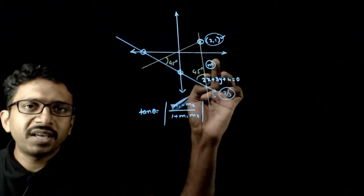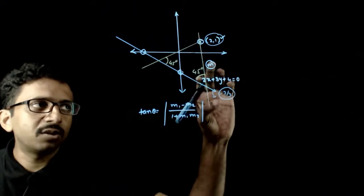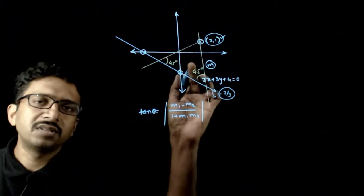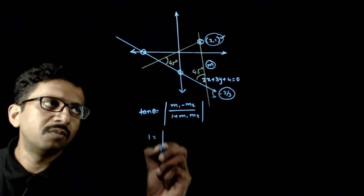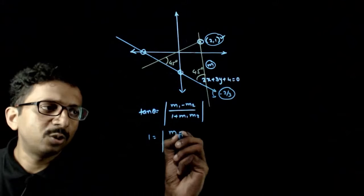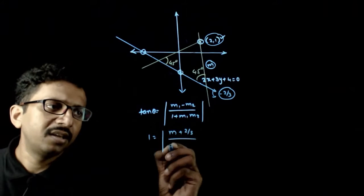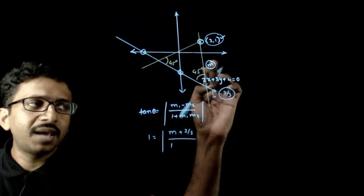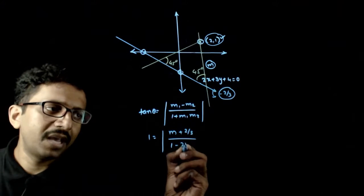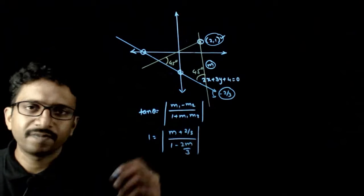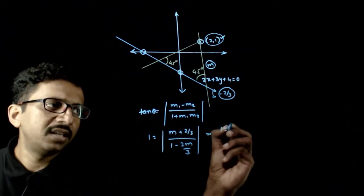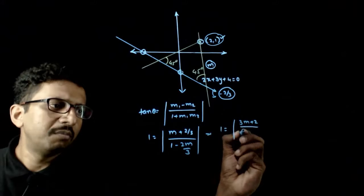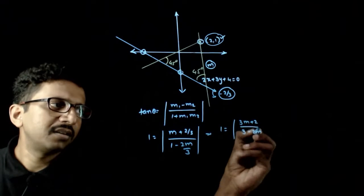So now this is my m — the first slope — and minus 2 by 3 is the second slope. Let us substitute in this. Tan theta, because this is 45 degrees, gives 1 is equal to mod of m minus (minus 2 by 3), which simplifies to m plus 2 by 3, divided by 1 plus m times (minus 2 by 3), that is 1 minus 2m by 3. This implies 1 is equal to mod of 3m plus 2 by 3 minus 2m.